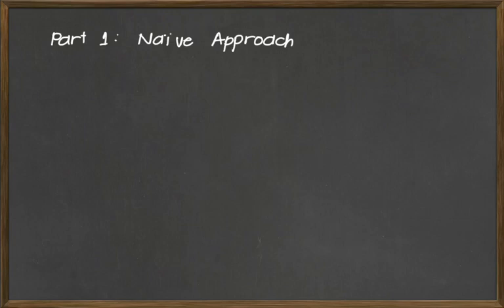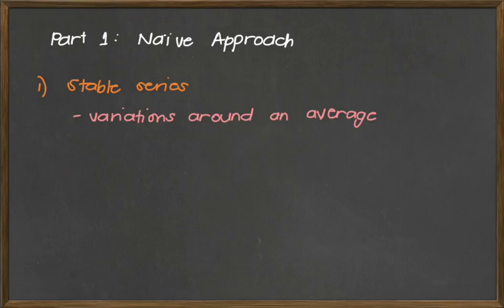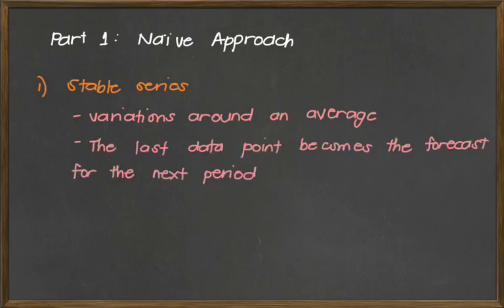For part one, the naive approach, we have three types. The first one is a stable series. By definition, a stable series shows variations around an average, and the last data point becomes the forecast for the next period. So basically, if the data is stable or falls under the stable series, the data sets are very close with each other, and the forecast for the next period is just the same as the value of the previous period.